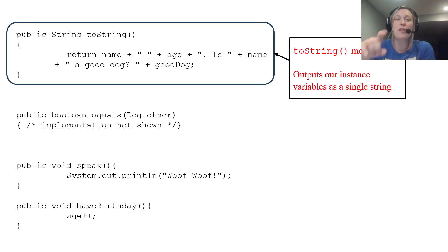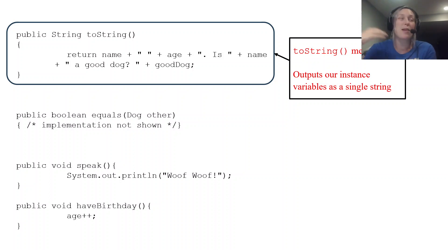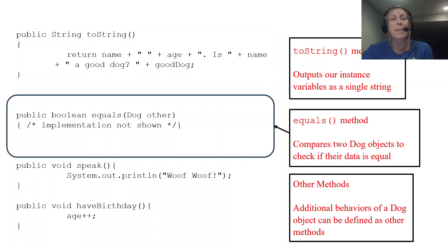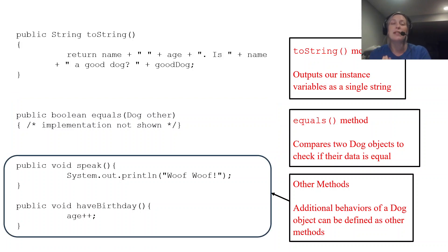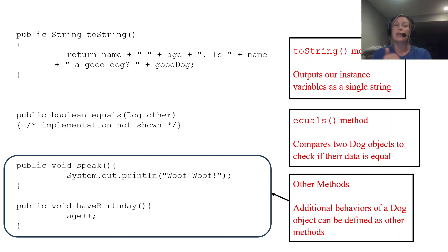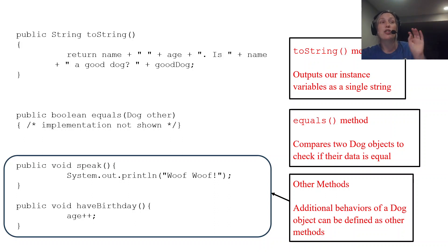We also have some special methods. The first is the toString method, which outputs our instance variables as a single formatted string. The second is the equals method — implementation not shown yet — which compares two Dog objects to check if their data is equal. Finally, there are other methods: non-static methods specific to the Dog object's behavior and specific to changing or doing something with the Dog's instance variables.